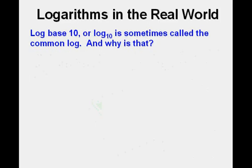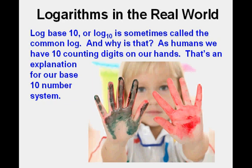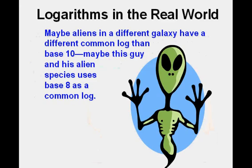Log base 10 or log subscript 10 is sometimes called the common log. And why is that? Well, as humans, we have 10 counting digits on our hands. That's an explanation for why we use a base 10 number system today. Now maybe aliens in a different galaxy have a different common log than base 10. Maybe this guy and his alien species uses a base 8 as a common log.